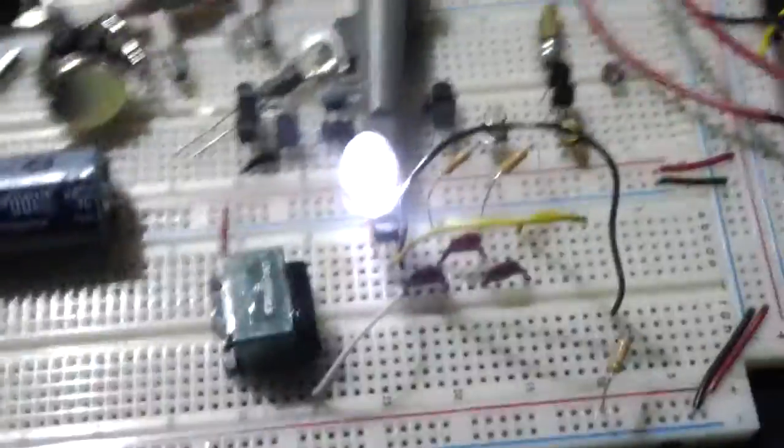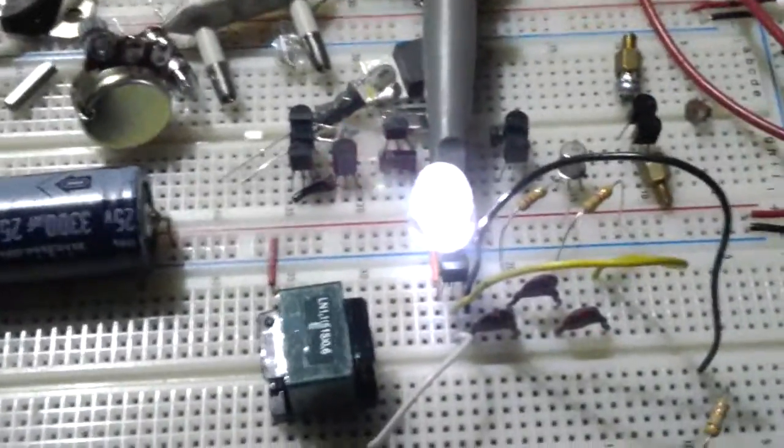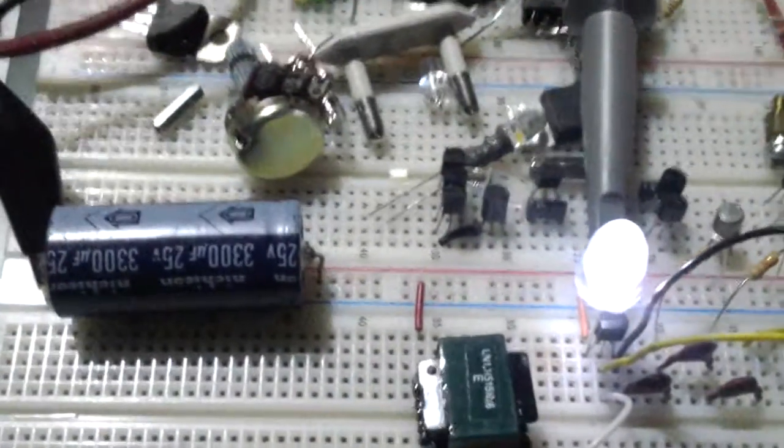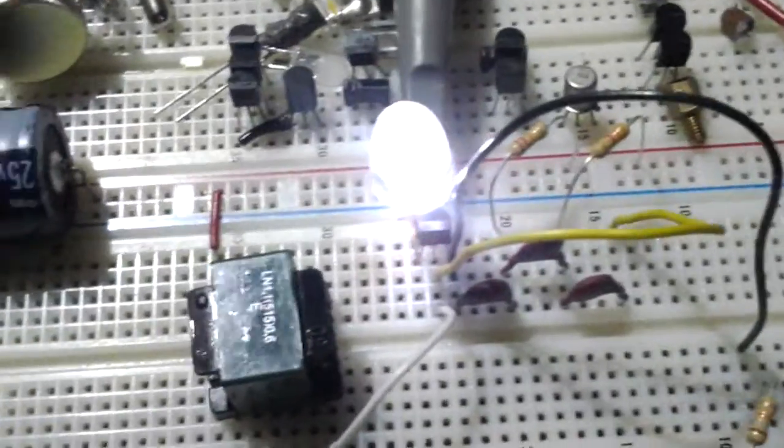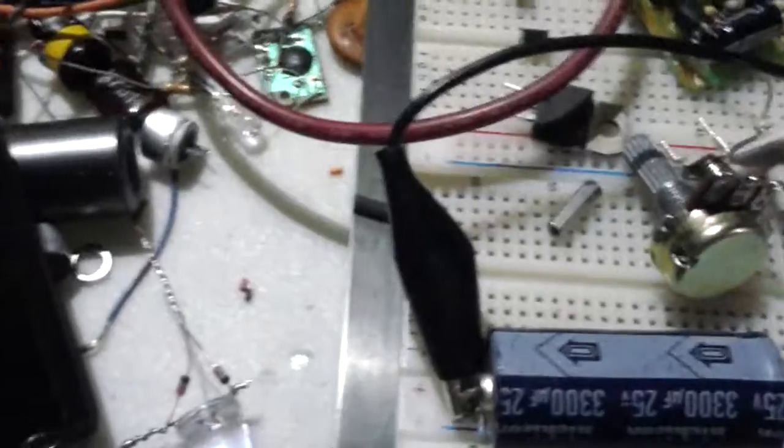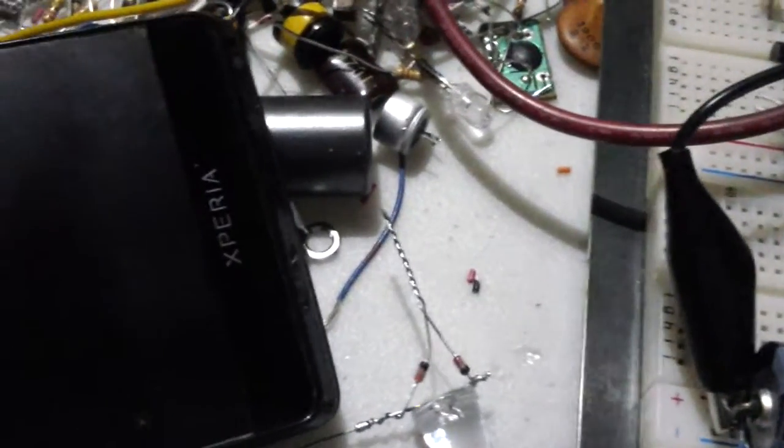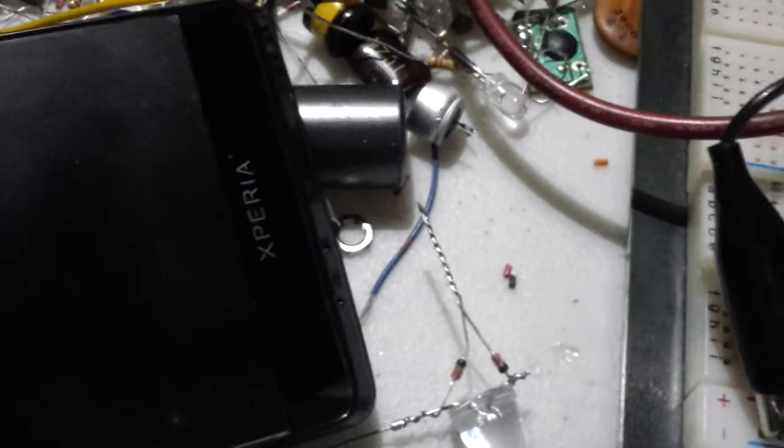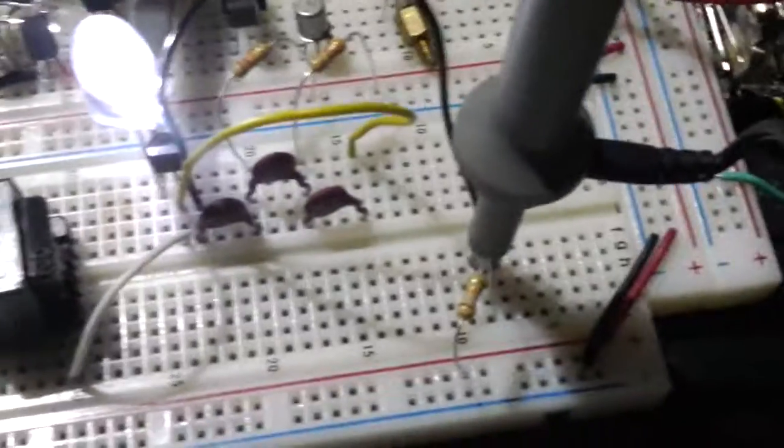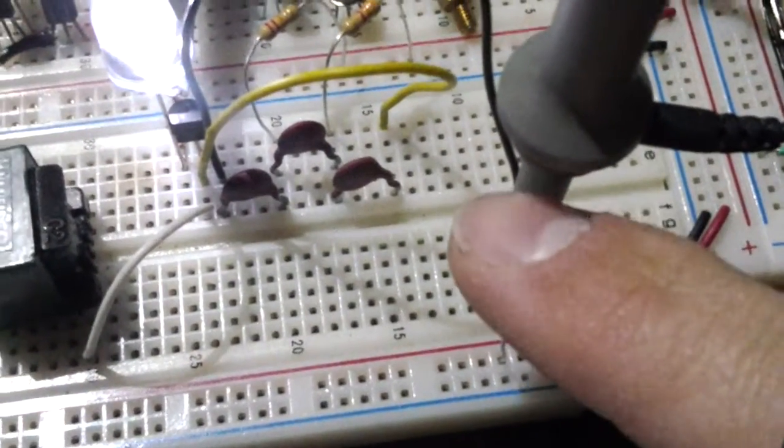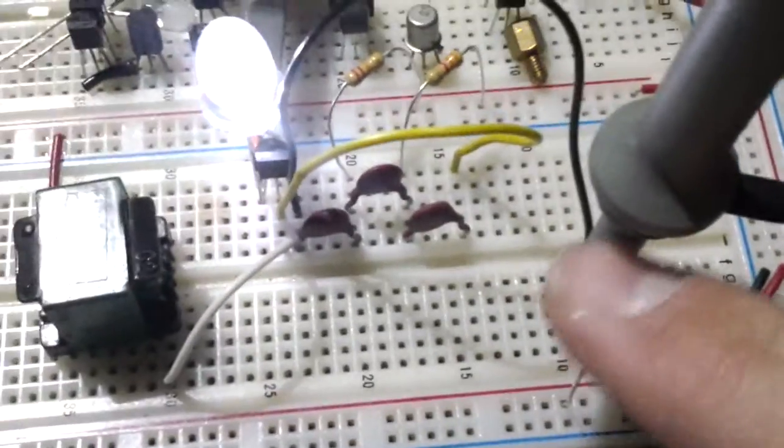And I could show you, let me get my other scope probe here, feed that into my second channel. So I've connected the second channel on the base of the transistor.